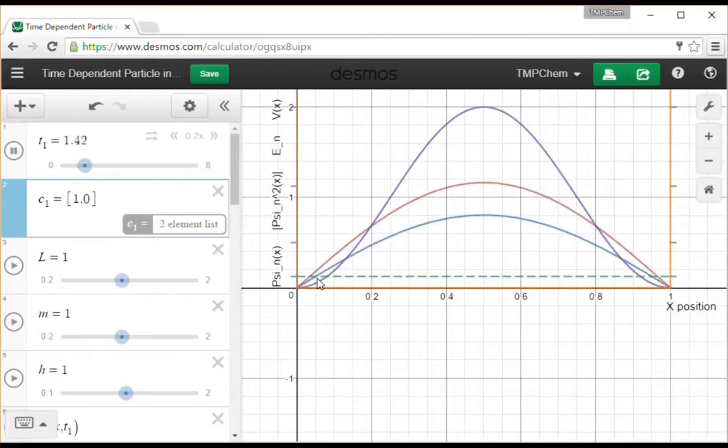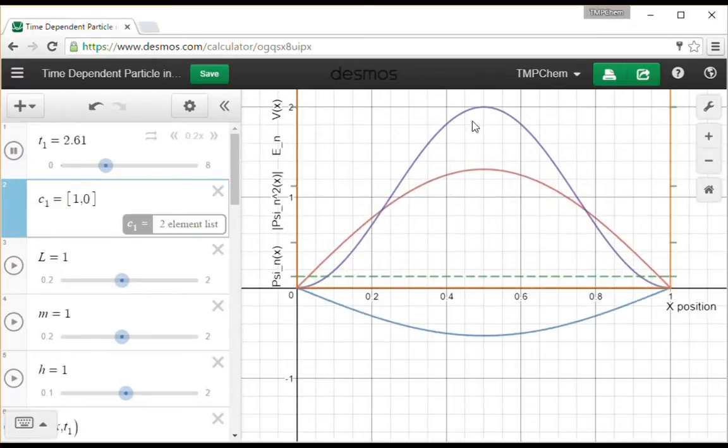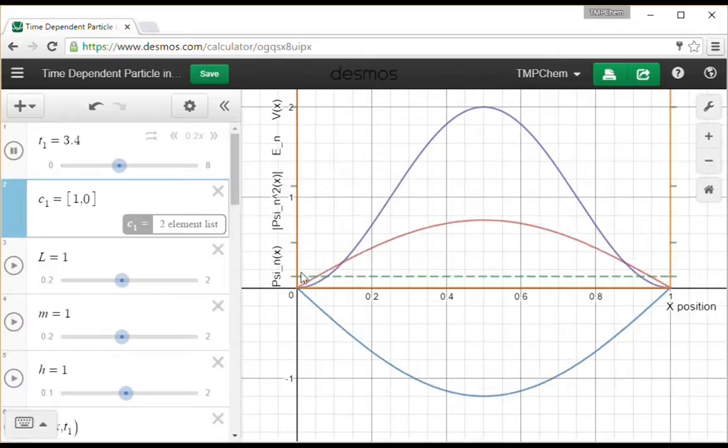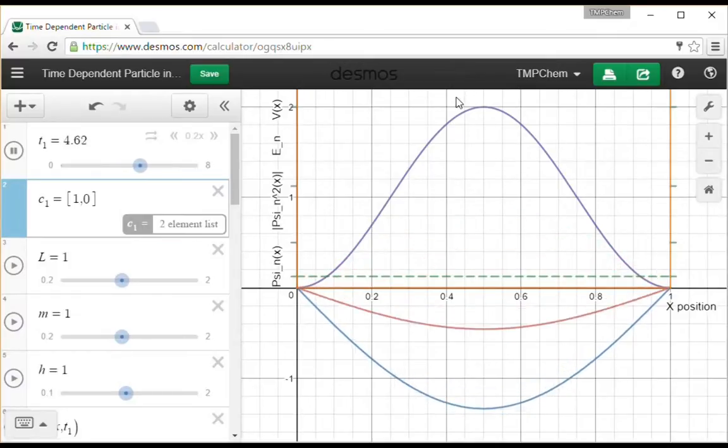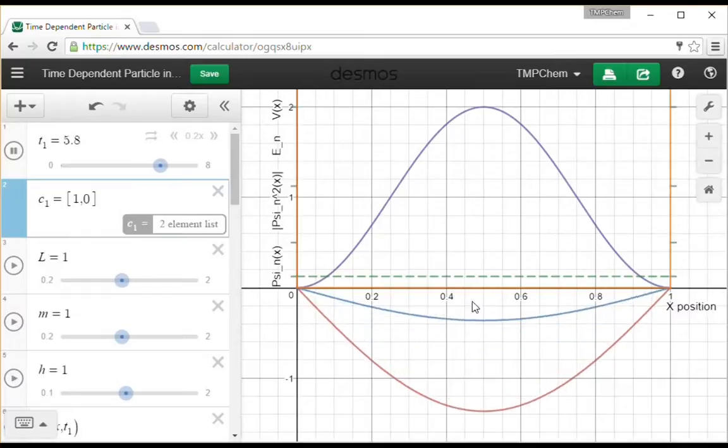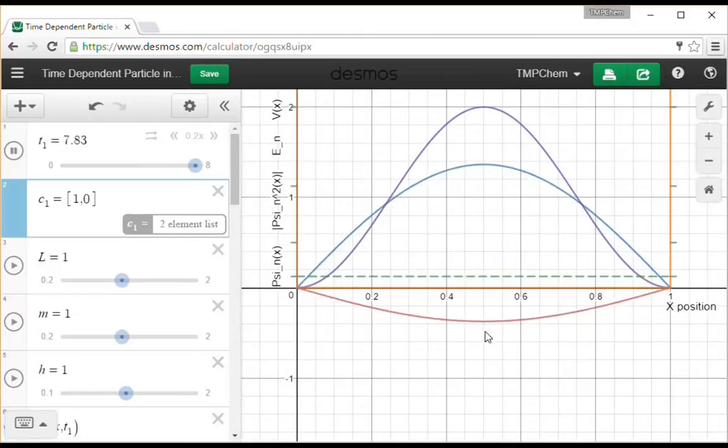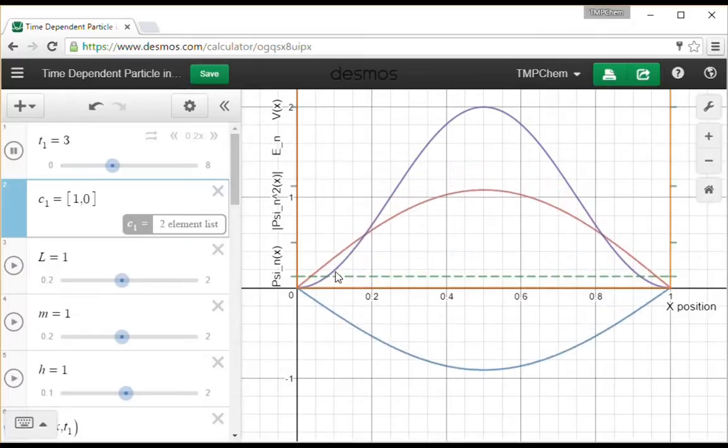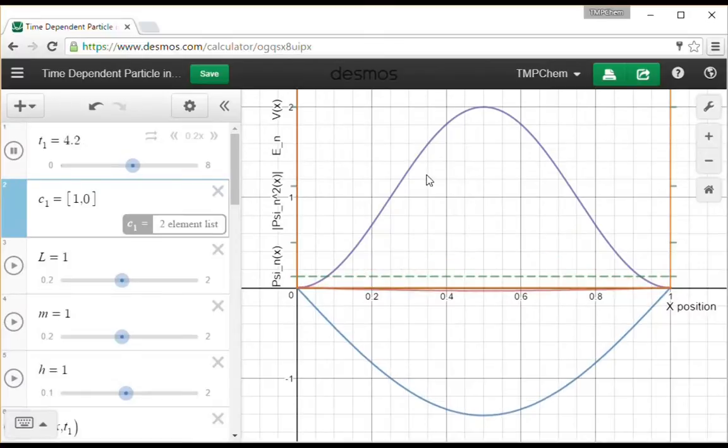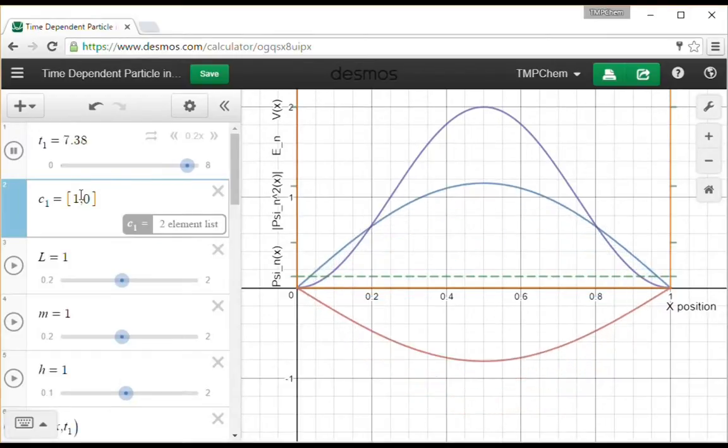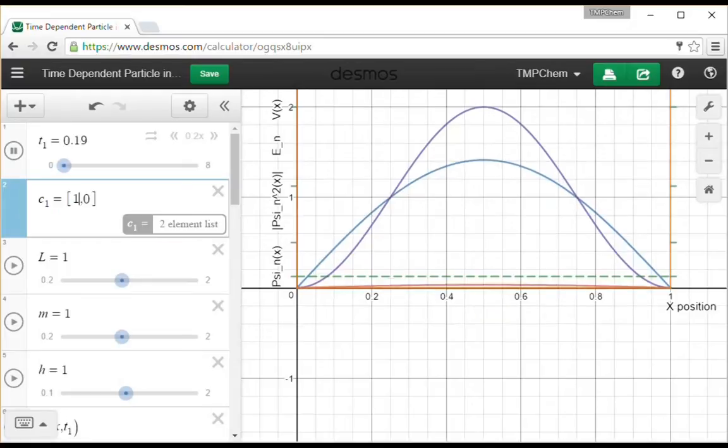Alright, so our energy is constant in time. And our probability density for psi 1, which is an eigenfunction, is constant over time. That's why it's a stationary state. Notice that our real part in blue and our imaginary part in red, those are cosine and sine functions. They're oscillating back and forth, rotating around the complex plane in time. But the two for a stationary state combine in a way such that our probability density is constant. Our energy is just the energy of psi 1. Our density is the density of the spatial part of psi 1.